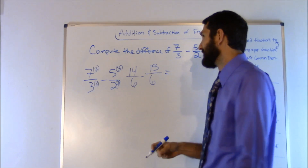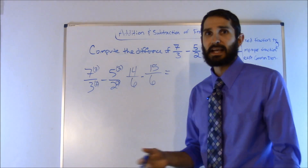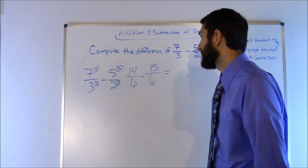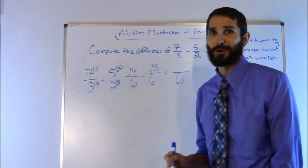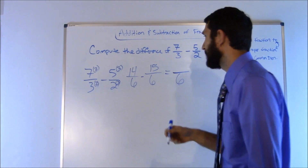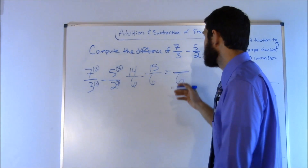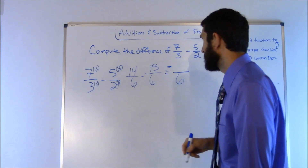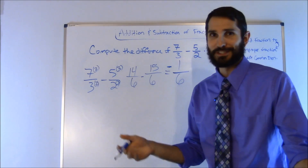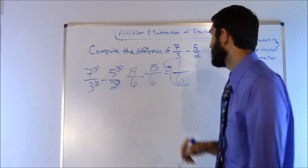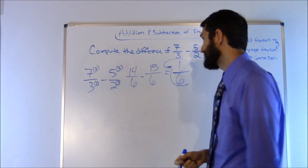Now the denominators match, so E for execute: carry the denominator 6. Subtracting numerators: 14 minus 15 gives a negative number. The easiest way is to note it'll be negative and flip it — 15 minus 14 is 1. So the answer is negative 1 sixth. S for simplify: can that be simplified? No — negative 1 sixth is the final answer.